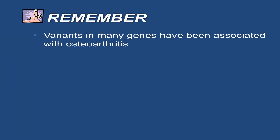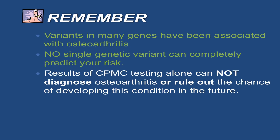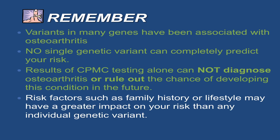Remember, osteoarthritis is a complex disease, which means that it is caused by a combination of variants in multiple genes and the environment. No single genetic variant causes osteoarthritis, so no single genetic variant will completely predict your risk for osteoarthritis. Results of CPMC testing alone do not diagnose osteoarthritis or rule out the chance of developing osteoarthritis in the future. Genetic variant information can help estimate your risk; however, other risk factors like your family history or lifestyle may have a greater impact on your risk than any individual genetic variant.